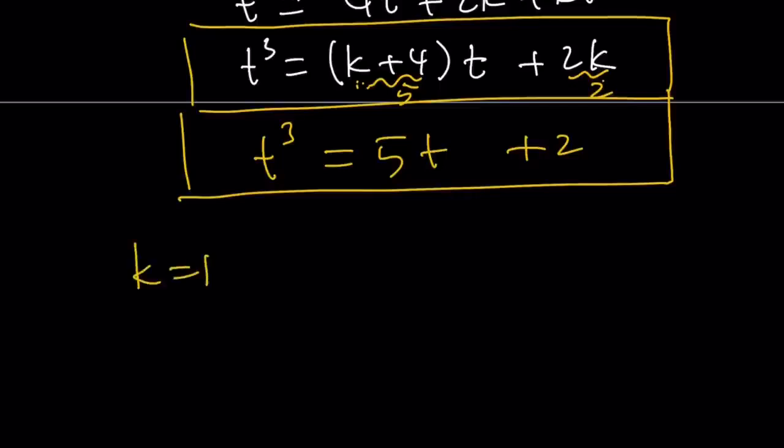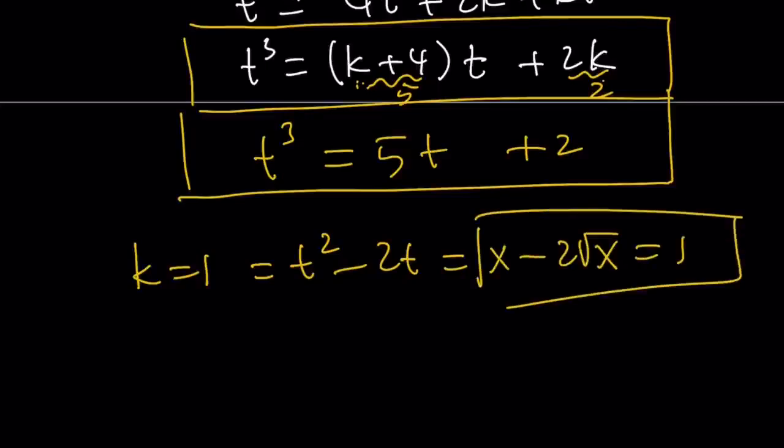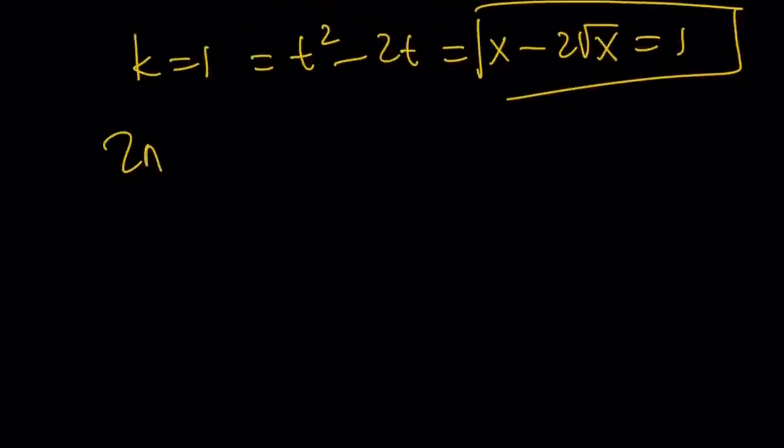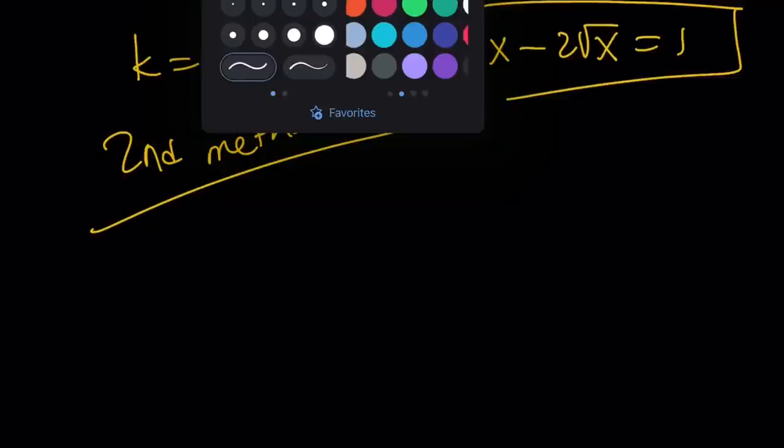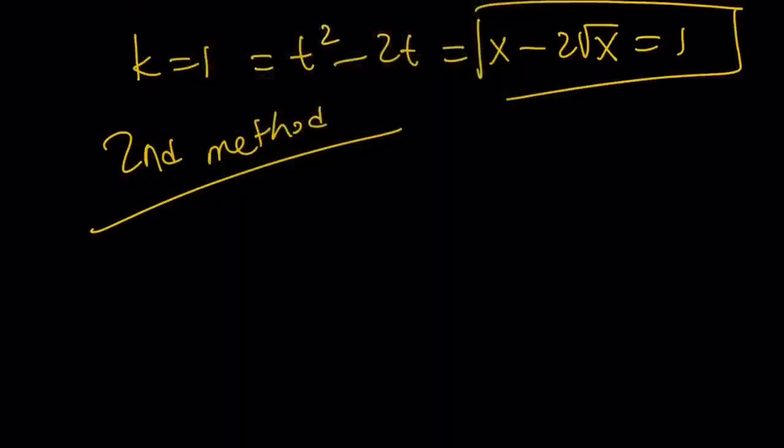We are good to go. What is k? k is t squared minus 2t, which is equal to x minus 2 times the square root of x. Therefore, we got the value we are looking for. Let's go ahead and take a look at the second method. And I'm hoping that second method you will find cooler. That is the hope.